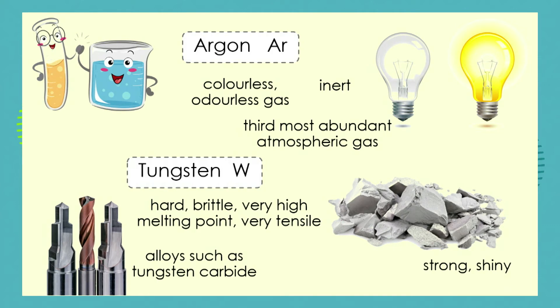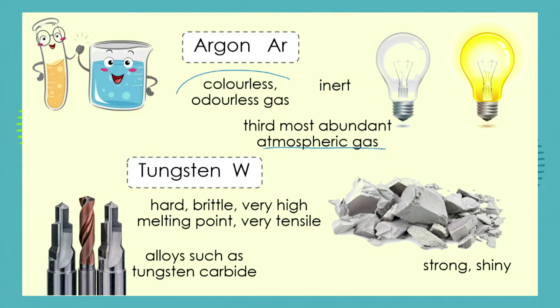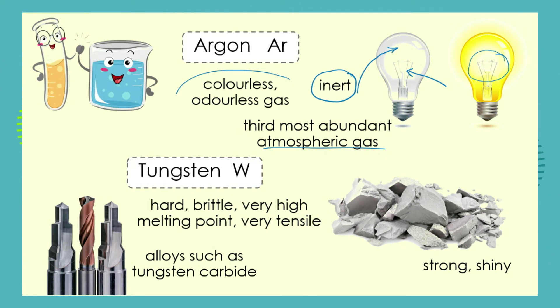Argon is a colourless, odourless gas. It's the third most abundant gas in our atmosphere, and every time you breathe in you're breathing in a lot of argon — but the same amount comes out because we don't use it. The interesting property about argon is that it's inert: it doesn't react much with any other elements. So we can put it inside light bulbs, meaning whatever reaction is happening inside, it's not going to explode.